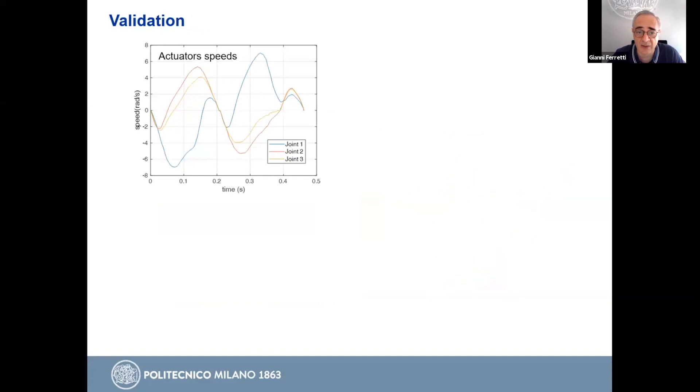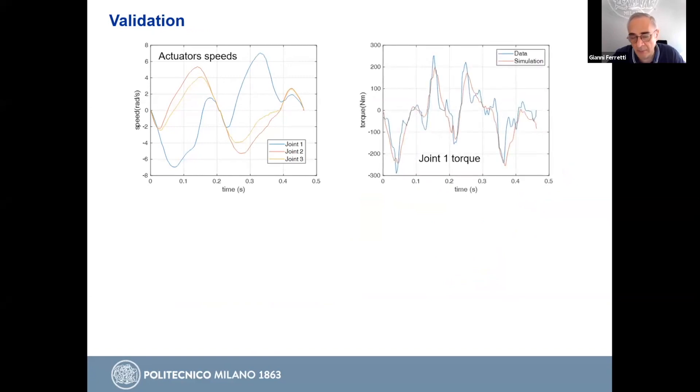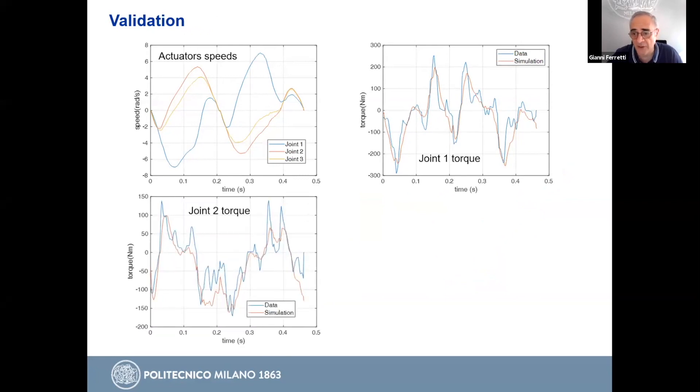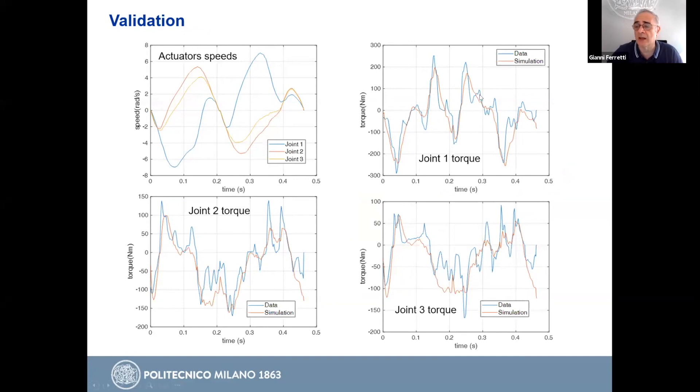The results are the following. Here you can see the measured actuator speeds, motor angles, and here you can see the comparison between the joint torques, the computed joint torques, and the measured joint torques. This for the first joint, the second joint, and the third joint. So in blue, the blue line is relevant to the data and the red line is relevant to the simulation.